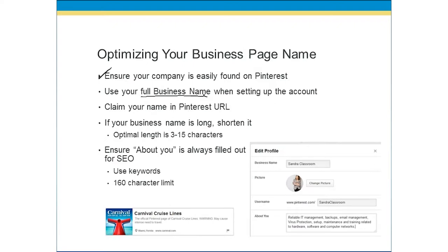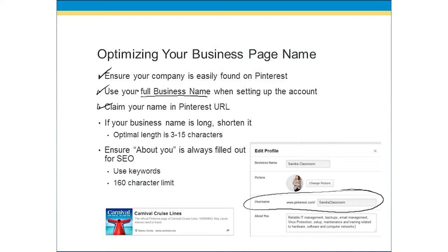You also want to make sure that you claim your name in a Pinterest URL. For example, we have Pinterest.com slash Sandra Classroom. So as you're leading people back to your Pinterest page, they can type that URL directly and see everything you've got for your boards. As soon as you set up that account with your full business name, make sure to claim your URL. If your business name is a little bit longer, you want something short and easy to remember when you look at that URL.